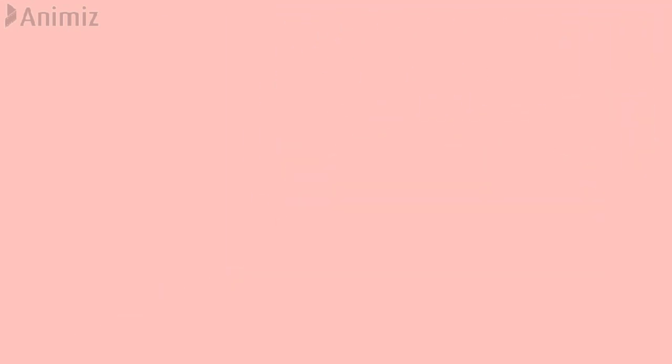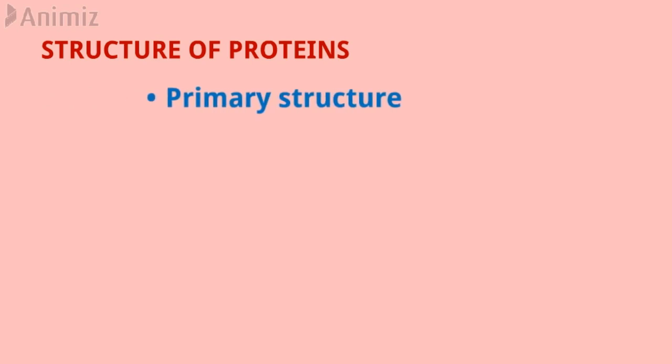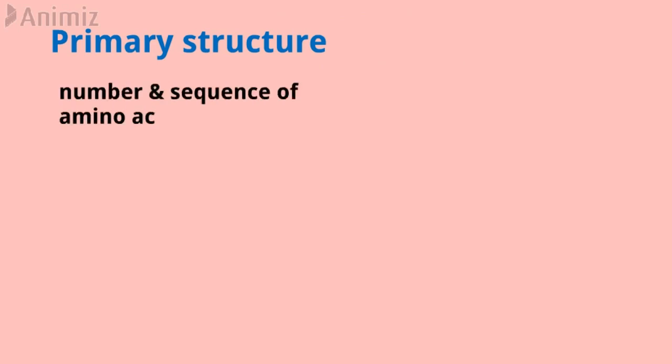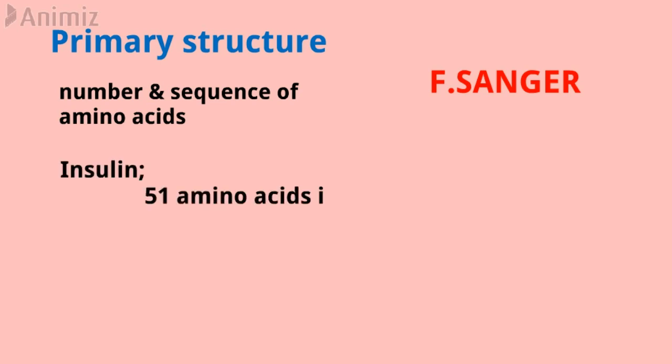There are four levels of protein structure: primary, secondary, tertiary, and quaternary. The primary structure comprises the number and sequence of amino acids in a protein molecule. F. Sanger was the first scientist to determine the sequence of amino acids in a protein molecule. After 10 years of work, he concluded that insulin is composed of 51 amino acids in two chains.